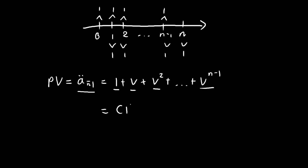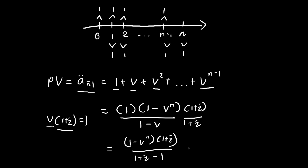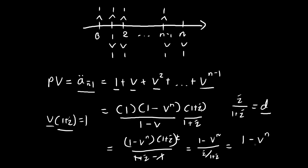Using the geometric series formula: the first term is 1, the common ratio is v, and we have n terms, divided by 1 minus the common ratio. Now multiply the numerator and denominator by 1 plus i. Keep in mind that v times (1 plus i) equals 1, because you discount and then compound to get back 1. In the denominator we get (1 plus i) minus 1, giving us i. Bringing the (1 plus i) to the bottom gives i divided by (1 plus i), which equals the rate of discount d. So the present value of the annuity due equals (1 minus v to the power of n) divided by d.